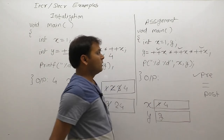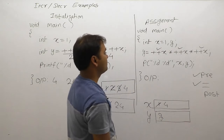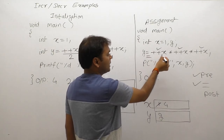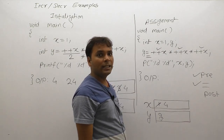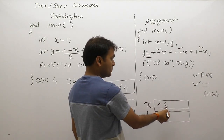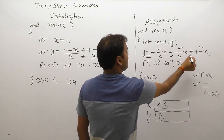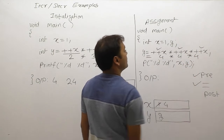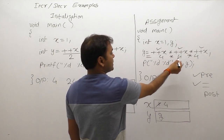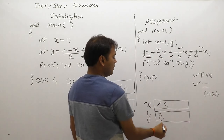x becomes 4. Next, assignment: y gets the current value of x multiplied — 4 multiply by 4 multiply by 4. The total result is 16 multiply by 4 is 64. So 64 is assigned to y.